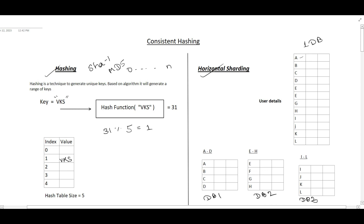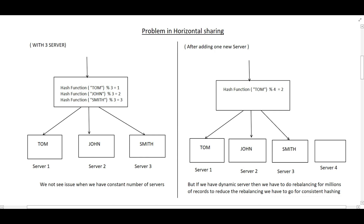Now let's jump into the problem — what consistent hashing is trying to solve. Suppose we have 3 DB servers: DB1, DB2, and DB3. To store a value into a particular DB, we do a mod on the hash function result with the number of servers, which is 3. Suppose the value 'TOM' hashes and mod 3 gives 1, so TOM is stored in DB1. Then 'JOHN' hashes and mod 3 gives 2, so John is stored in server 2. Then 'SMITH' hashes and mod 3 gives 3, so Smith is stored in DB3.